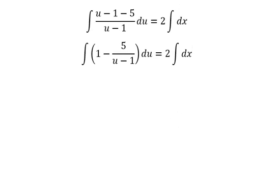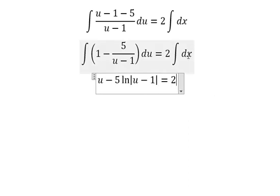And now we have the final answer. The integration of number one, you got about u. The integration of number five over u minus one, you got about five ln of the absolute value of u minus one. The integration of dx you got about x and we put about C.